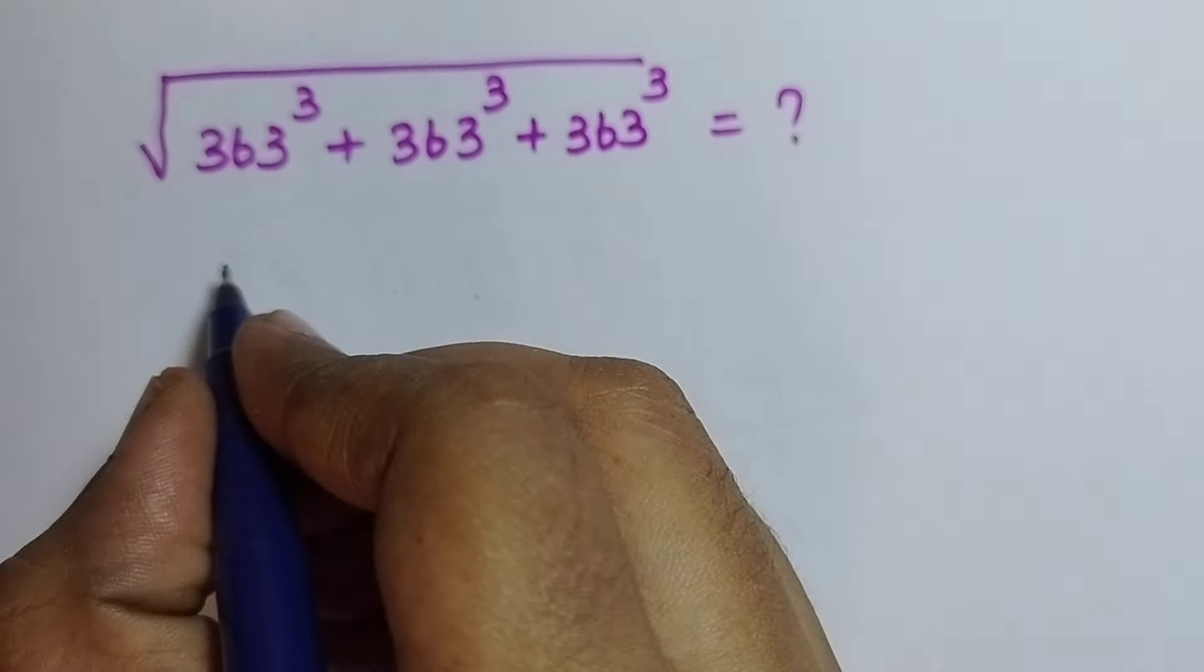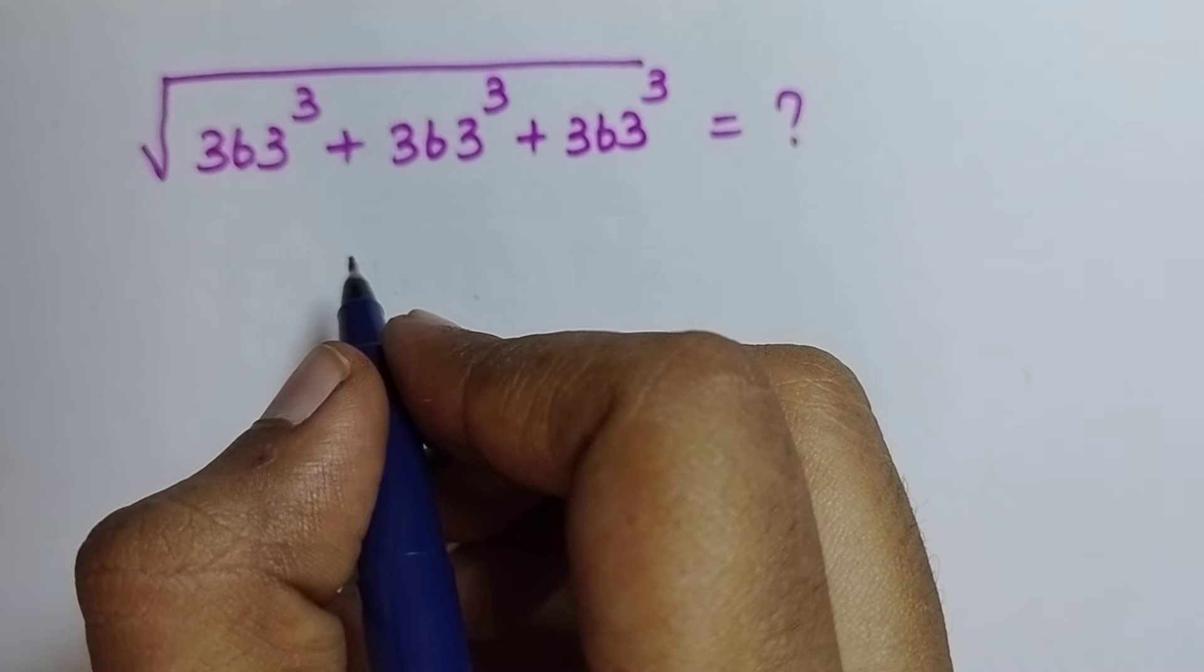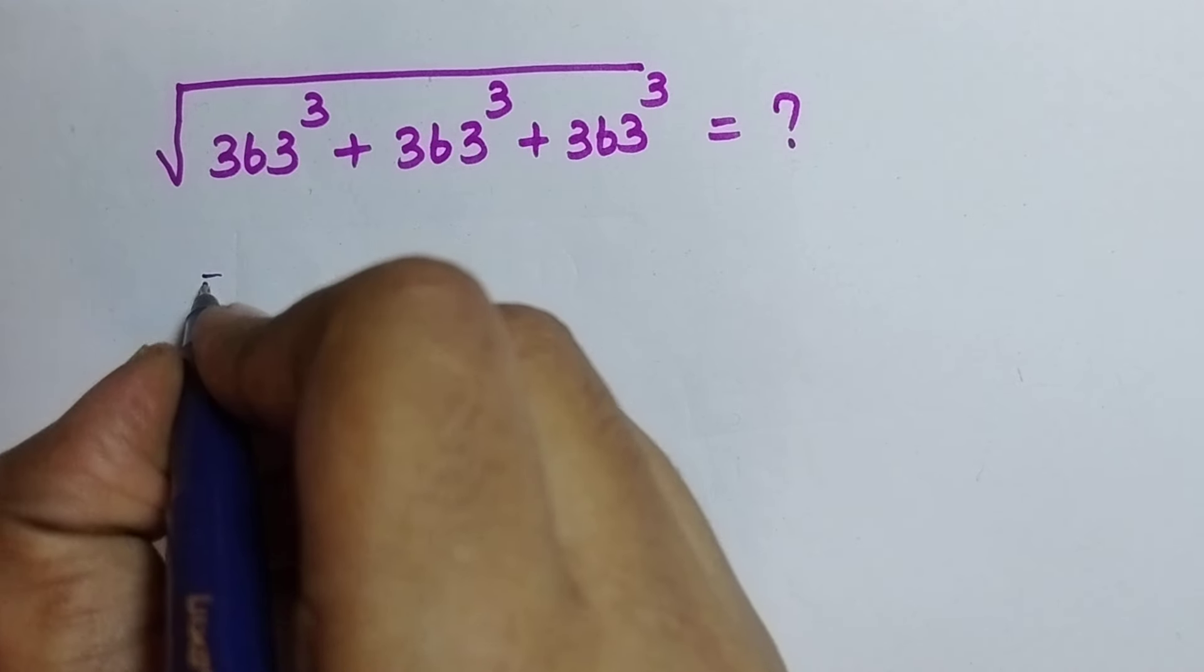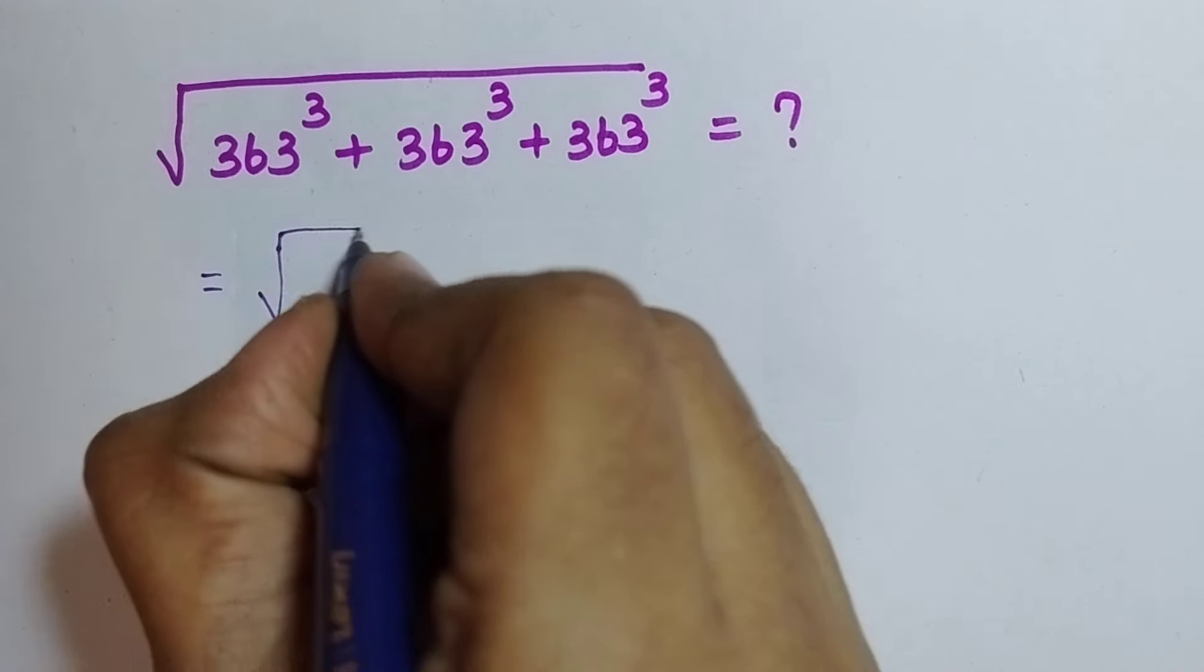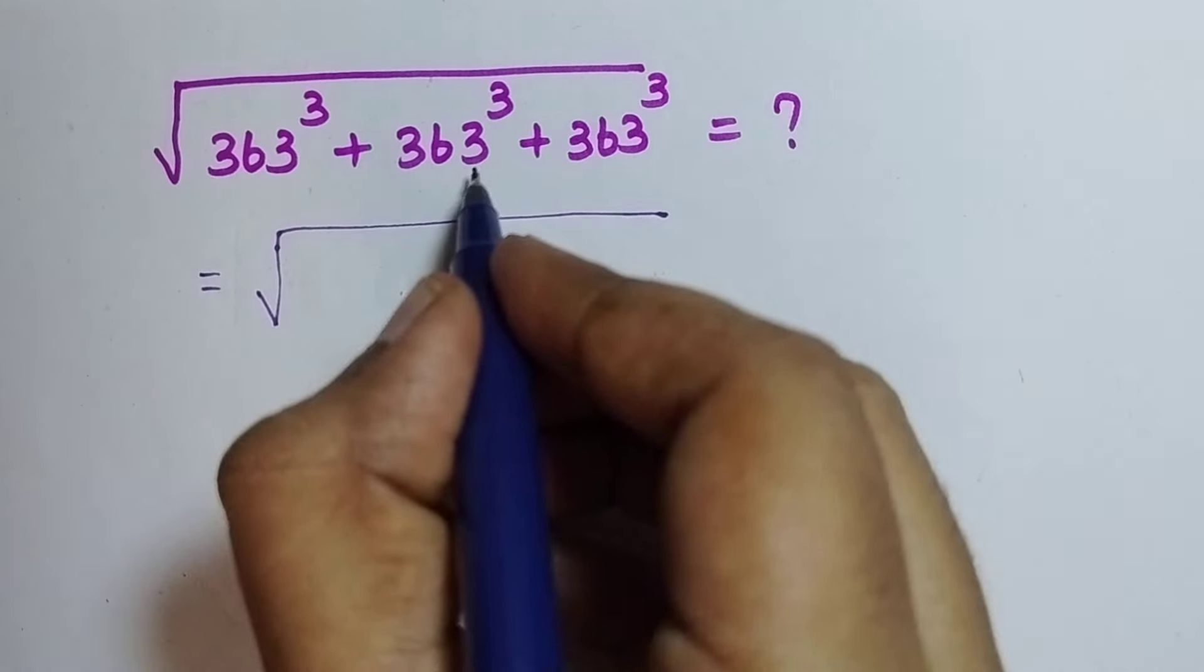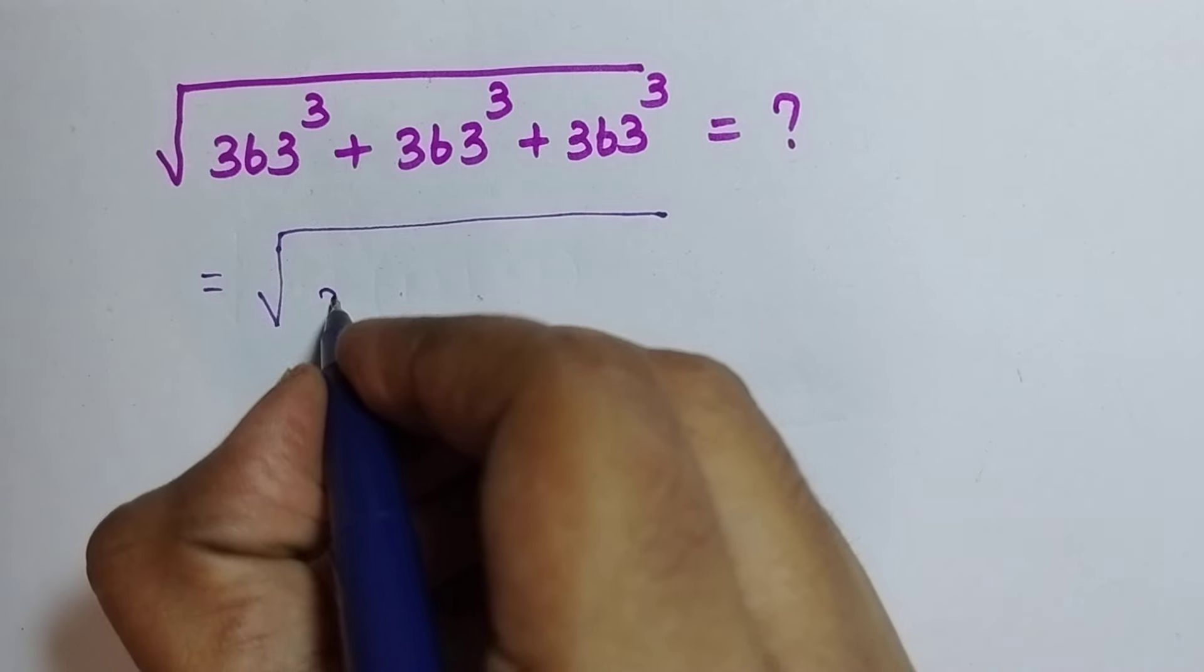So for that, first we see here the same term is repeated 3 times in addition. The question is equal to the root of, so here 363 the whole cube is common in each term. So, now I am going to take that out.